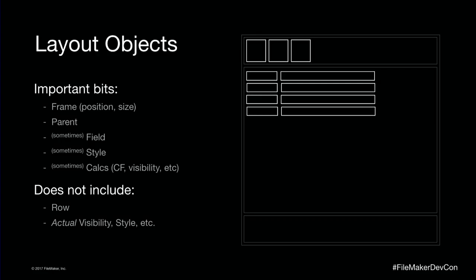When I'm talking about layout objects, I'm talking about the model — the thing we use to store the position of an object, where it shows up on screen, the size, and its parent. In the case of portals and tabs, that's another important piece. Layout objects don't live in a list; they live in a tree. As you add groups and tabs, you make that tree deeper. Some objects have things associated with them to facilitate loading data, like fields. All objects have styles that tell them how to draw. At this model level, there's no data, no row, no actual visibility or actual style — these objects are not what you see on the screen.